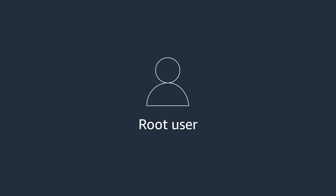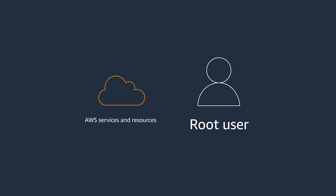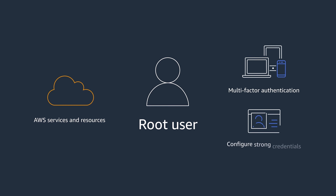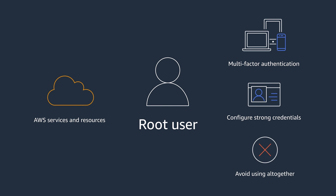Now that we have our centralized identity provider and we're enforcing the use of temporary credentials by federating access into AWS, it is time we secure our root user. The root user is the default one that we get when we first create an AWS account from scratch. This user has complete access to all AWS services and resources in the account. Given how much power this root user has, the best thing we can do is enable multi-factor authentication for it, configure strong credentials for it, and avoid using it altogether or as much as possible. While some actions require the use of the root user, these are the exception, and we should be using our identities from the identity provider for all our general activities on AWS.